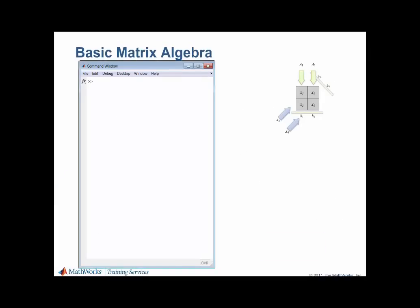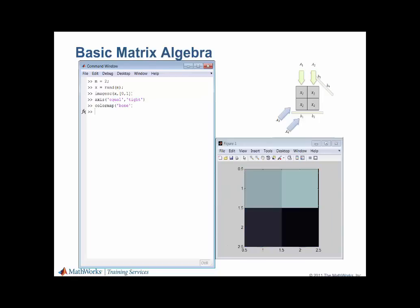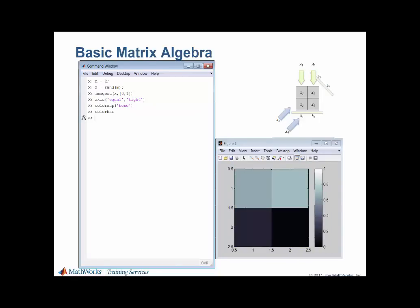Now that we have a model for a system with a square matrix, let's see how we can apply basic algebra operations to simulate the X-ray intensities measured. First, we'll create an arbitrary 2x2 image and visualize it. As you can see, the image values range from 0 to 1. We will now reshape the X matrix into a vector. Next, we'll create ray path matrix A. Note that it is a square matrix with full rank. Finally, we can calculate the simulated X-ray intensities measured B from the densities X and the ray path matrix A by using matrix multiplication.